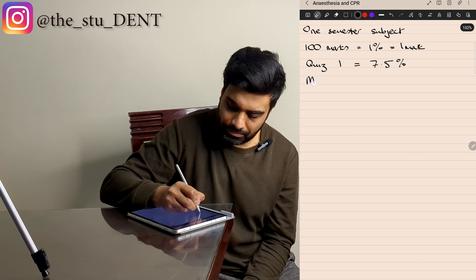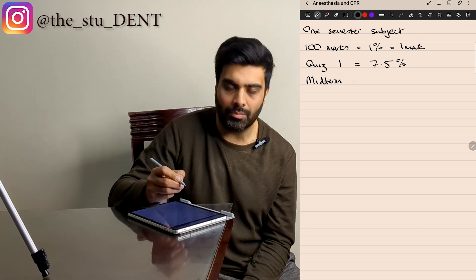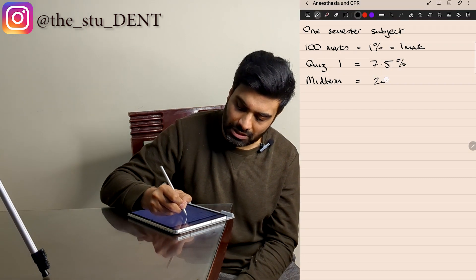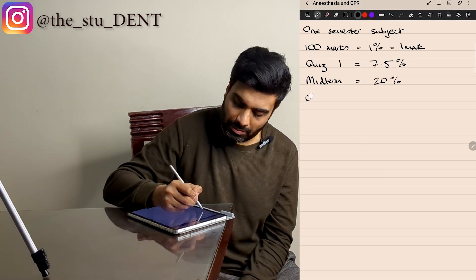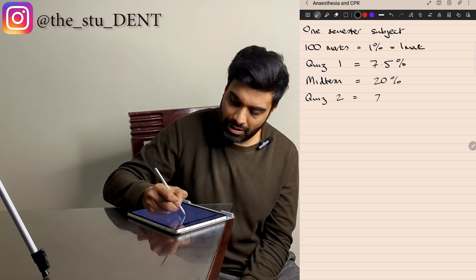Then we have the midterm, which kind of breaks up the semester into two, covering what we covered in Quiz 1 and what we will be covering in Quiz 2. The midterm is worth 20%, and within it you're going to have questions like: what are the complications of local anesthesia, what is the pharmacology of local anesthesia, and what can we do to rectify that as dentists? Quiz 2 is also worth 7.5%, and it covers the things not dealt with in Quiz 1 but included in the midterm.